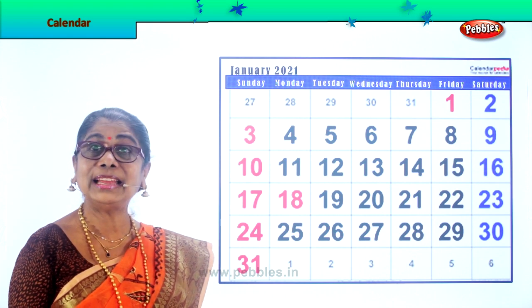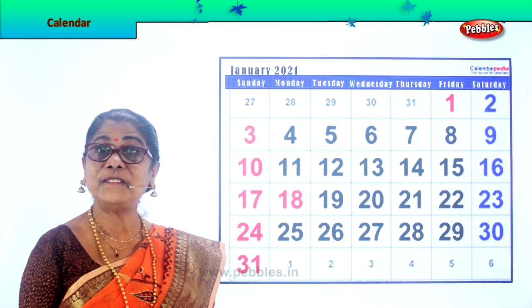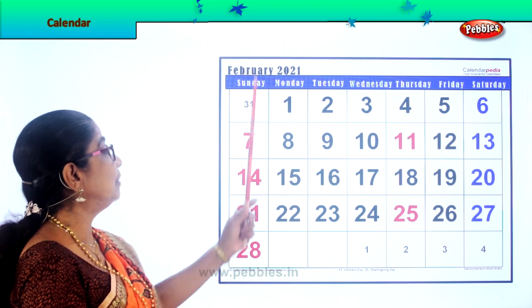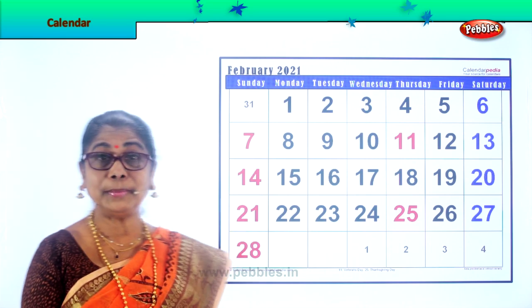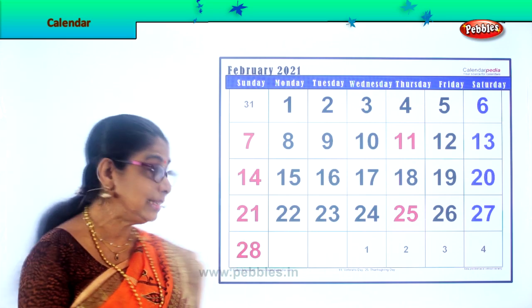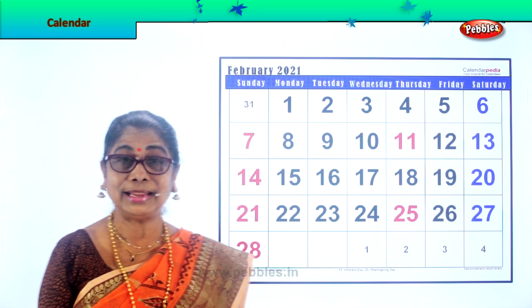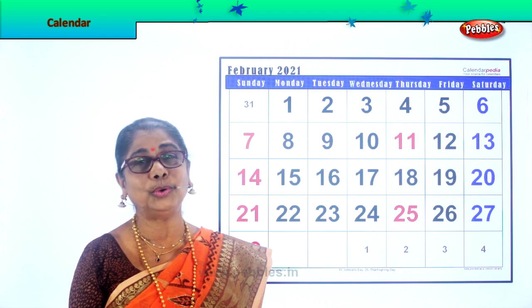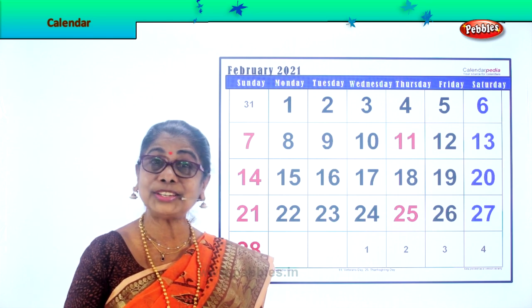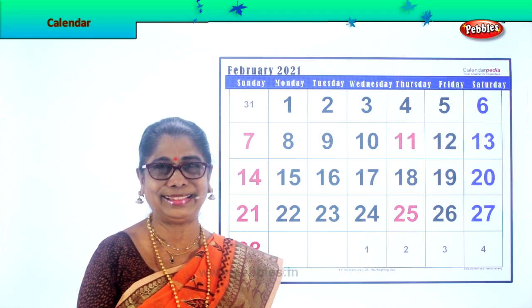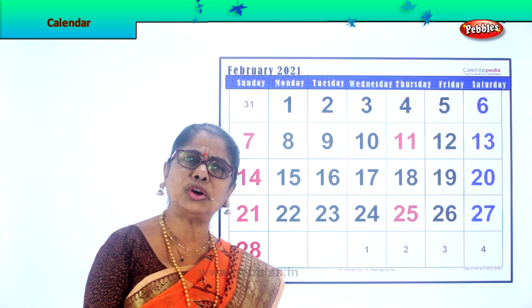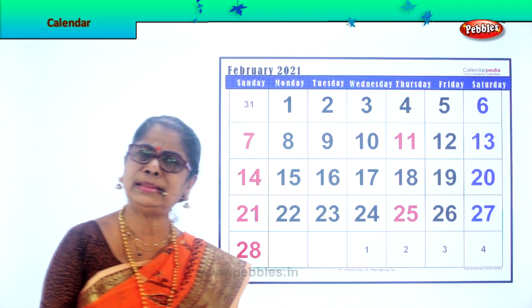Let's look at the month of February. Here is February — how many days does it have? 28 days. Do you love February? I do. Why? It's the shortest month. Let's go on to our next month.